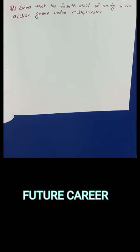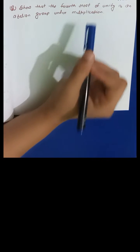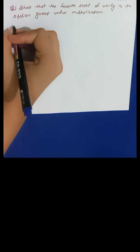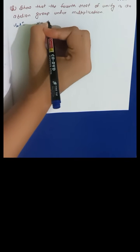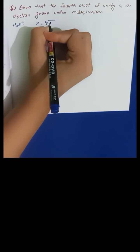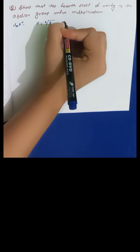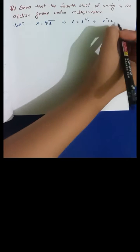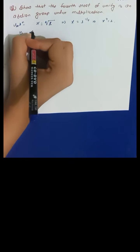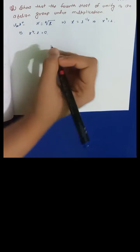The given question is to show that the fourth roots of unity form an abelian group under multiplication. Fourth roots of unity means x equals the fourth root of one, or x to the power four equals one, so x⁴ - 1 = 0.